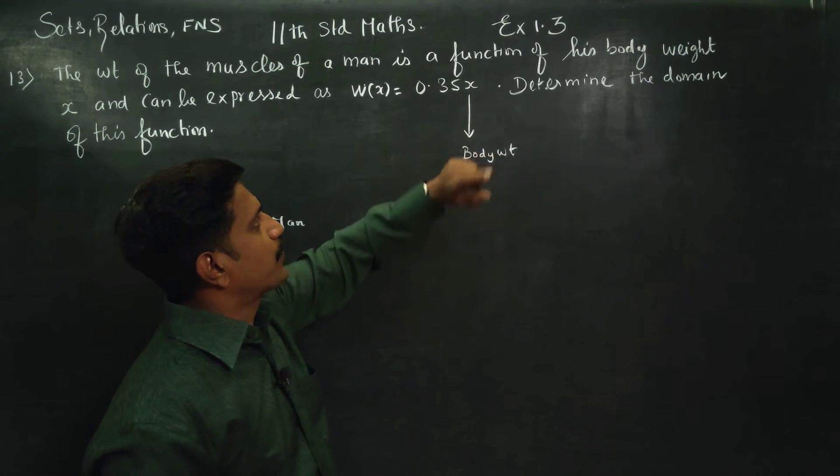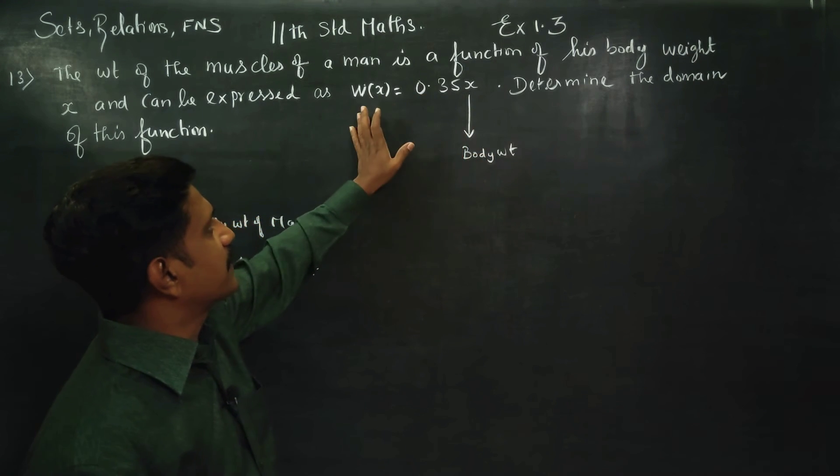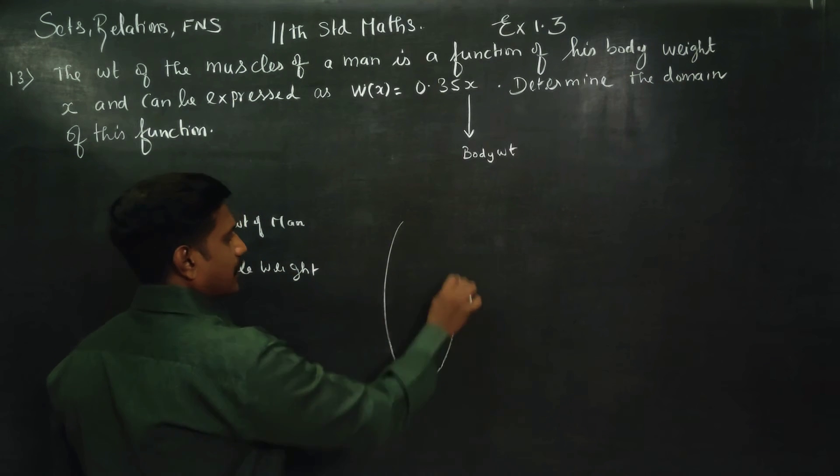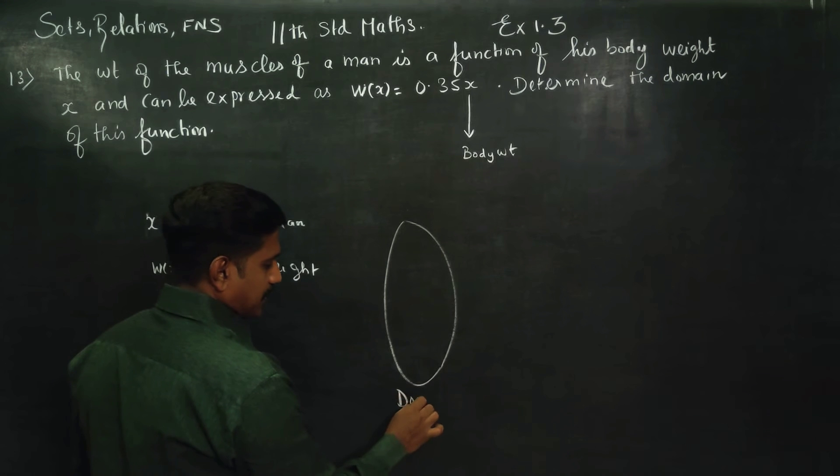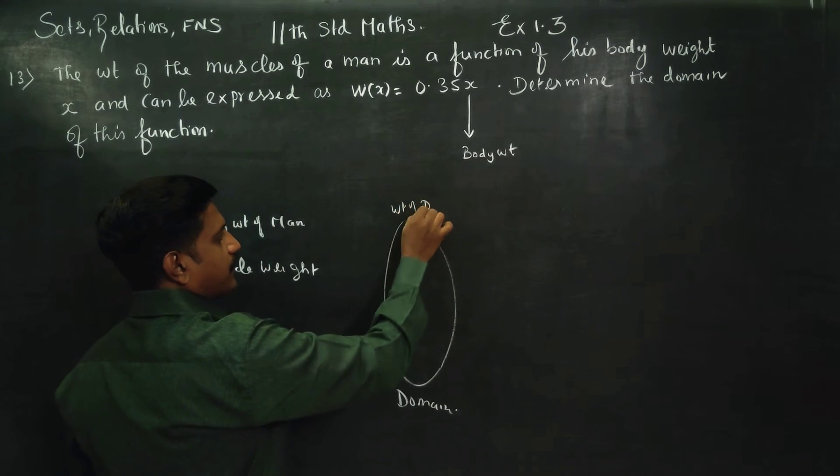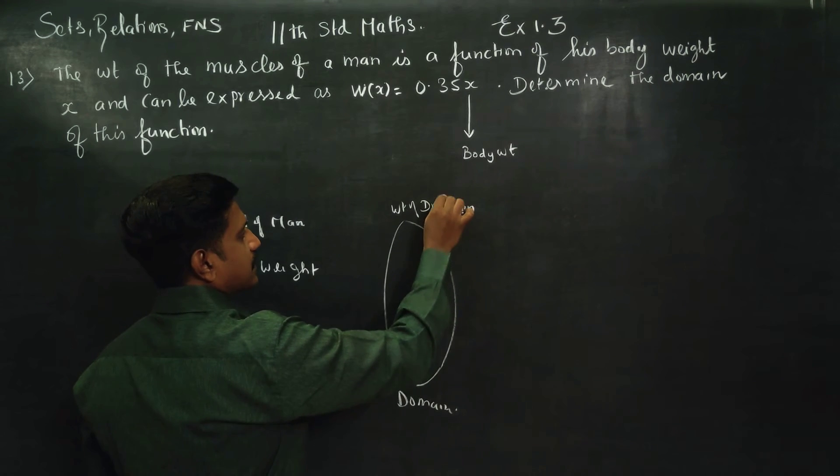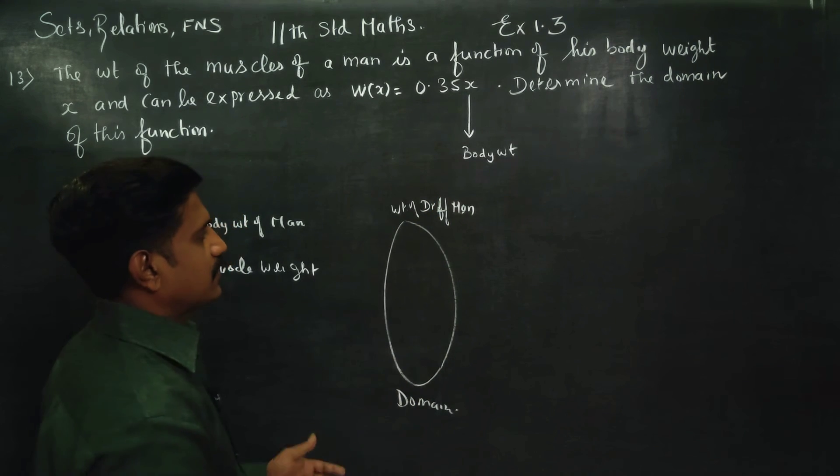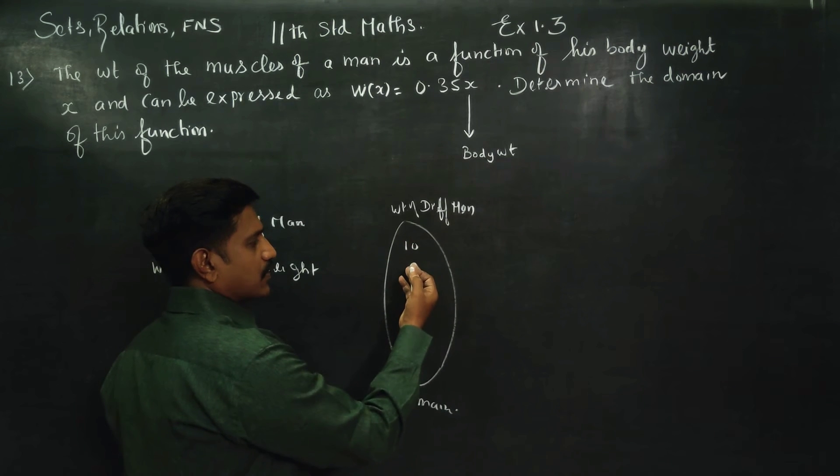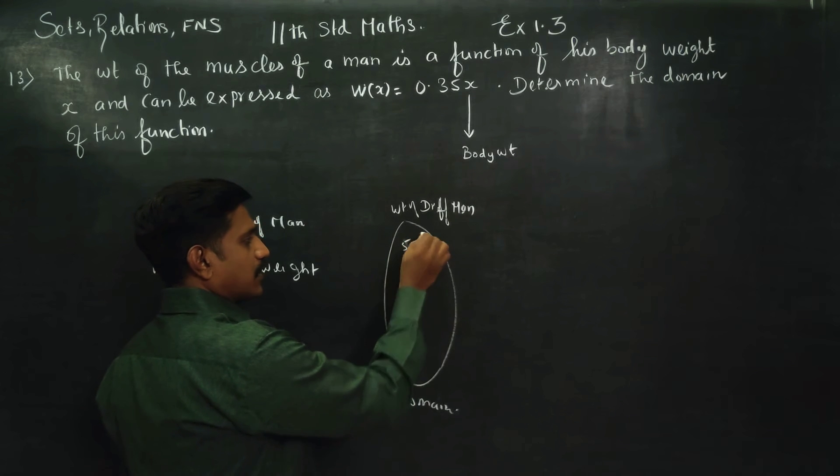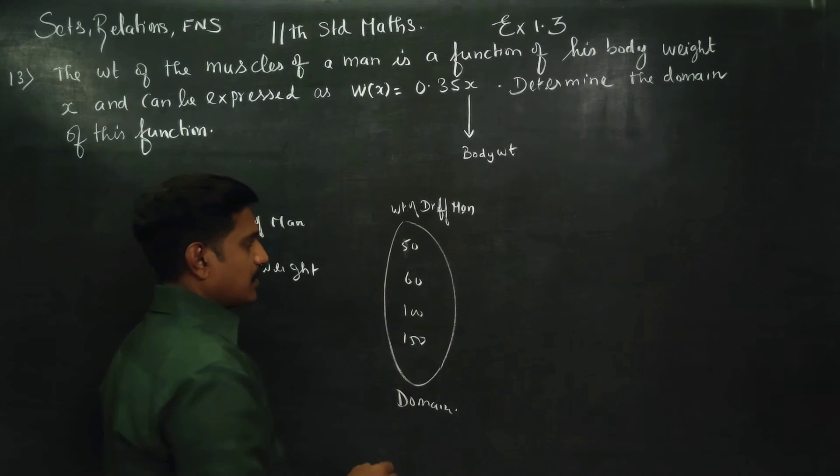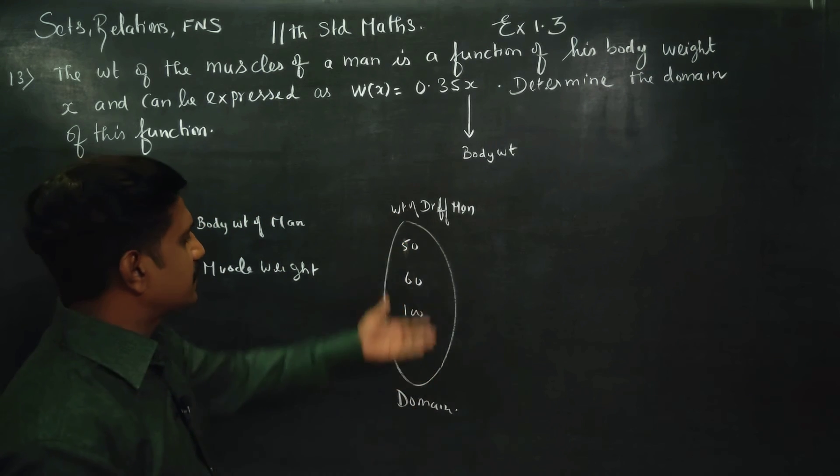It is a factor of 0.35, you have to multiply by 0.35, you will get the weight of the man. Now, if you look at the domain, you will see the weights of different men. For example, different weights of a man.